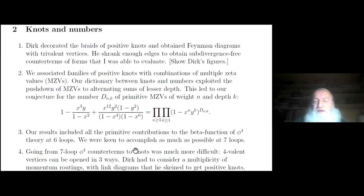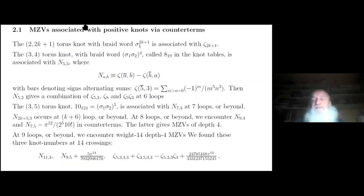And that's much more difficult. But what Dirk had to do was to open the four valent vertices of phi to the fourth theory. And you can do that in three different ways, S, T, and U channels. And so he had many possibilities for routing the momenta, and he had to turn these into link diagrams, and he had to scan those link diagrams to produce knots and identify the knots. But it worked when they were sure about something.